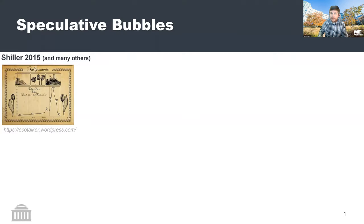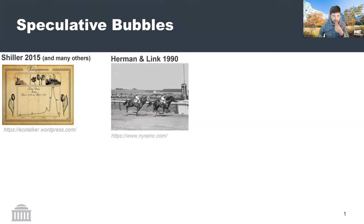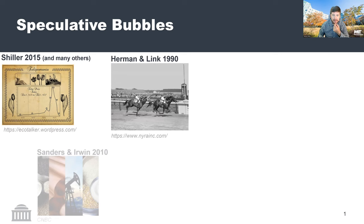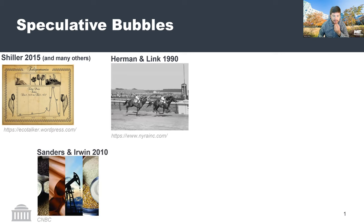When I say speculative bubbles, one of the first things that many people think of is, of course, the tulip mania — the massive increase in price of tulips. But there have been more recent examples. We can talk about thoroughbred horse prices in the 1980s specifically, and slightly more recently there's been investigation into the emergence of bubbles in commodities.